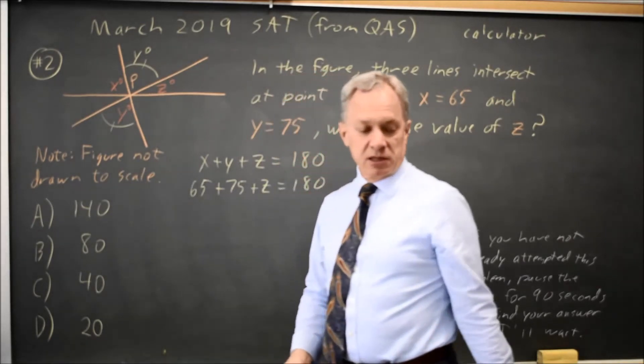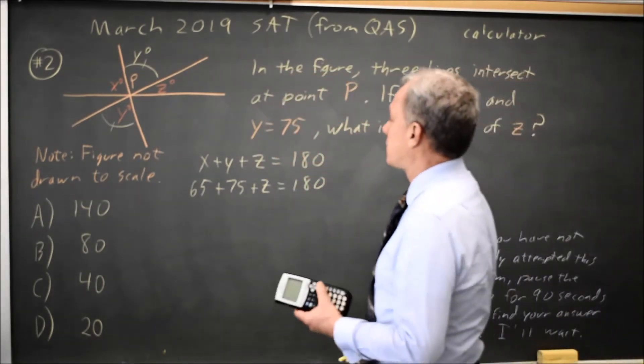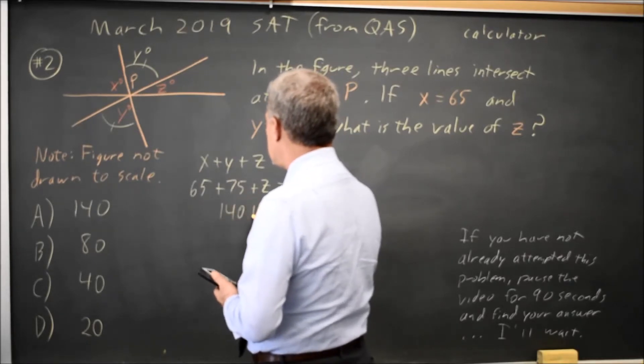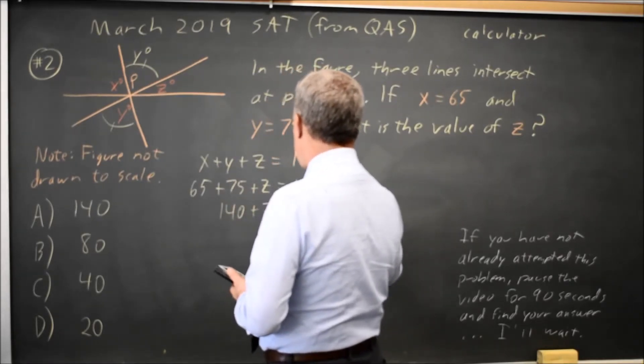This is a calculator question, so I could use my calculator to add 65 plus 75 and get 140 plus Z equals 180.